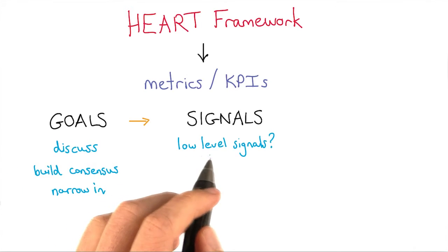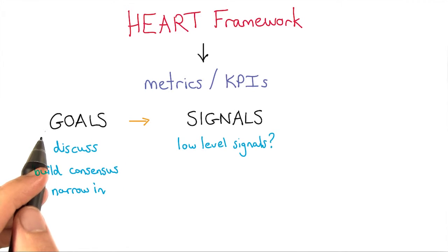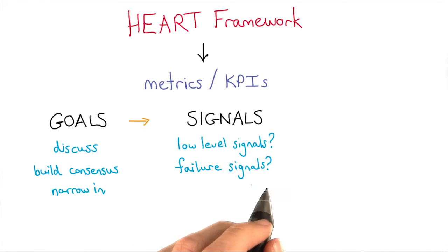Next, you want to pair low-level signals to each of the goals. For example, at Udacity, an engagement signal might be how many minutes of video a user watches with each session. You might also look at failure signals, such as failed searches when a user searches for something but doesn't click on any results.